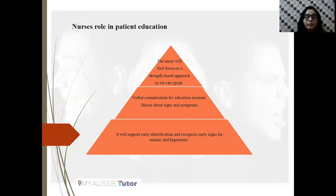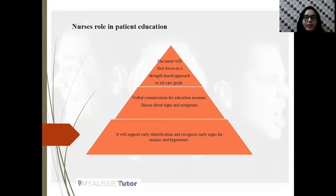The next slide covers the role of patient education and how nurses carry it out. Nurses will first focus on a strength-based approach to set care goals, since every individual has their own strengths and weaknesses. Identifying and assessing strengths before setting goals is essential for achieving them at the right time. Verbal communication for education sessions is the safest mode — patients can be educated about signs and symptoms so they will be able to identify them early, including manic and hypomanic episodes.